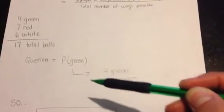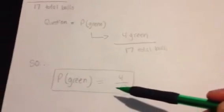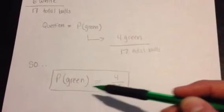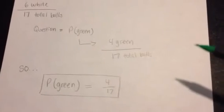you can write P of green as four green over 17, leaving you with that. So the probability of pulling out a green ball is four in 17 chances.